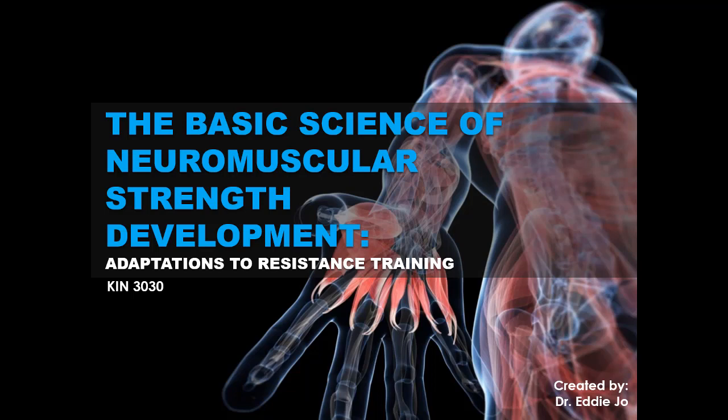Many people attribute strength development to just adaptations in the muscle itself. But we have to understand strength development is largely attributable to changes in the nervous system, even in the absence of any changes in the skeletal muscle itself. For this lecture series, we will compartmentalize it by discussing the adaptations in the nervous system that contribute to strength development, then talk about adaptations happening in skeletal muscle, and then bring it all together as we wrap up.